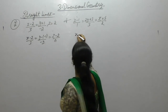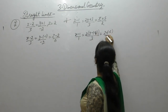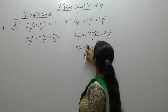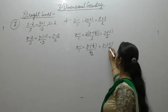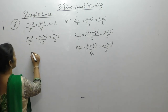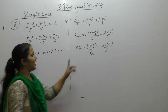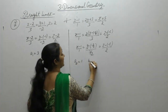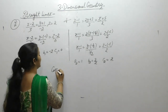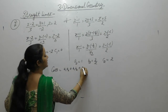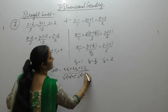Taking 2 as common and rewriting in standard Cartesian form, we identify the direction ratios for each line. Then we apply the formula: cos θ = (a1·a2 + b1·b2 + c1·c2) divided by sqrt(a1²+b1²+c1²) times sqrt(a2²+b2²+c2²).